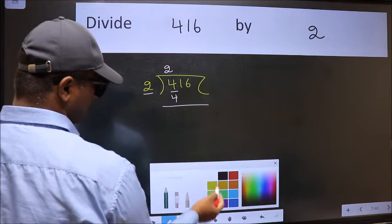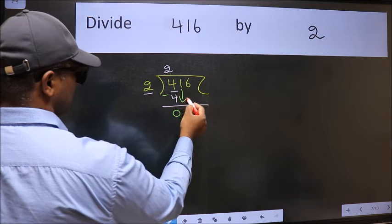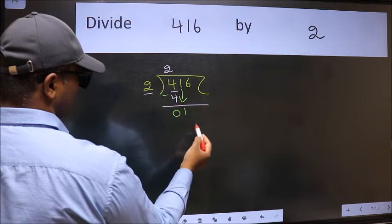Now we should subtract. We get 0. After this bring down the beside number. So 1 down.